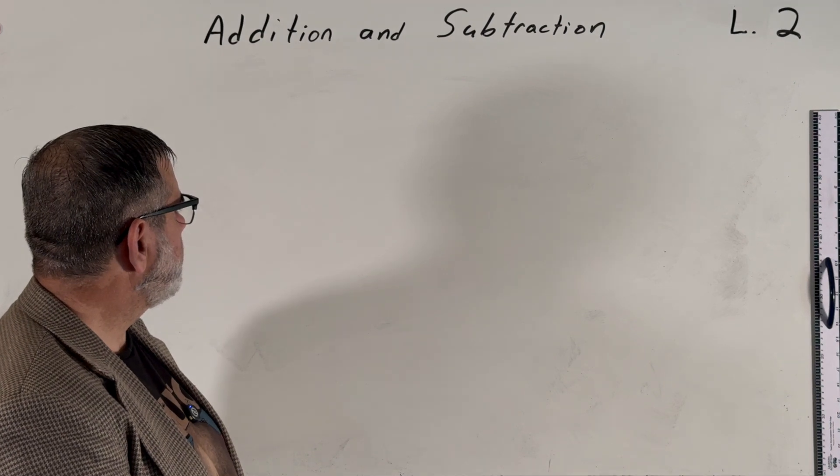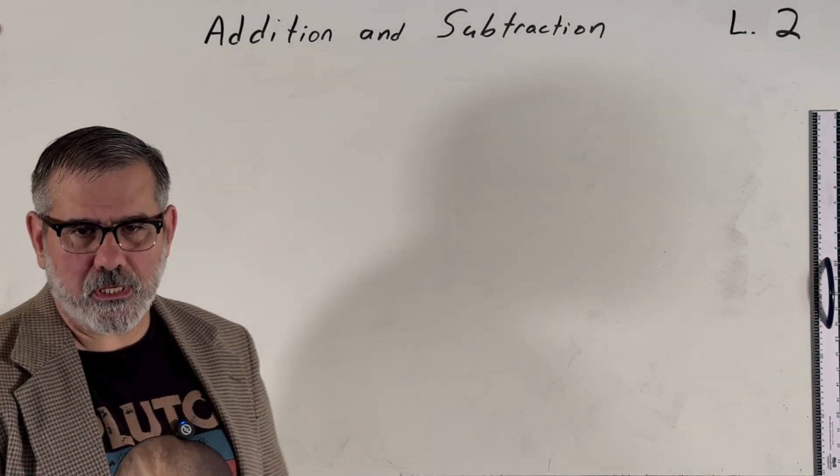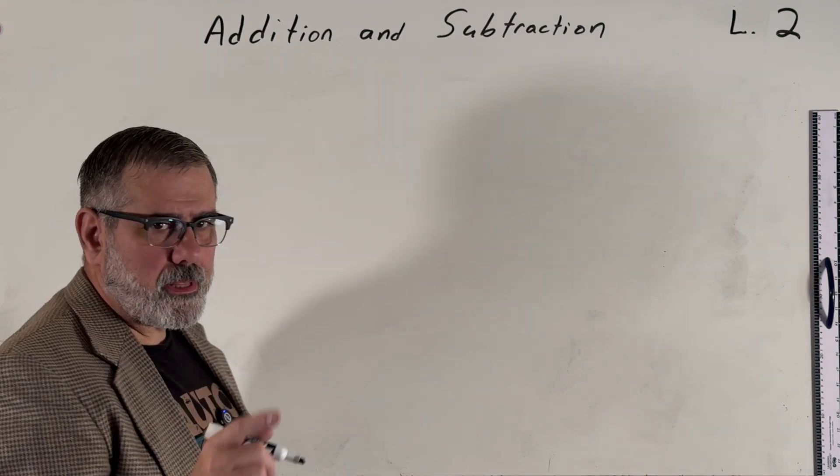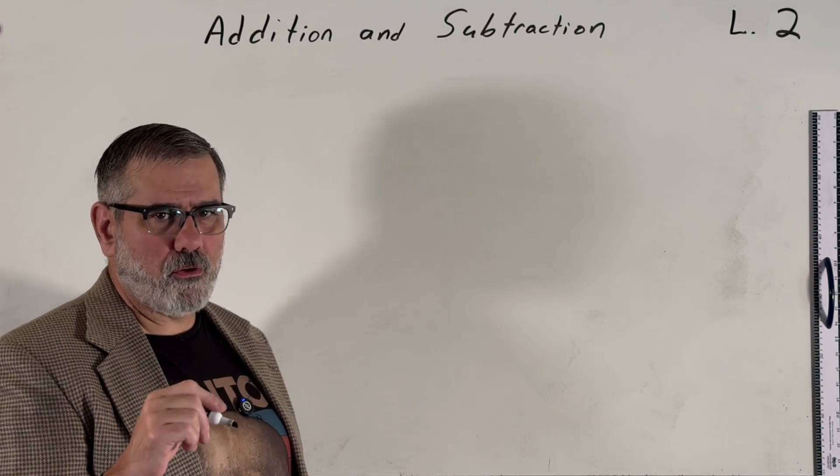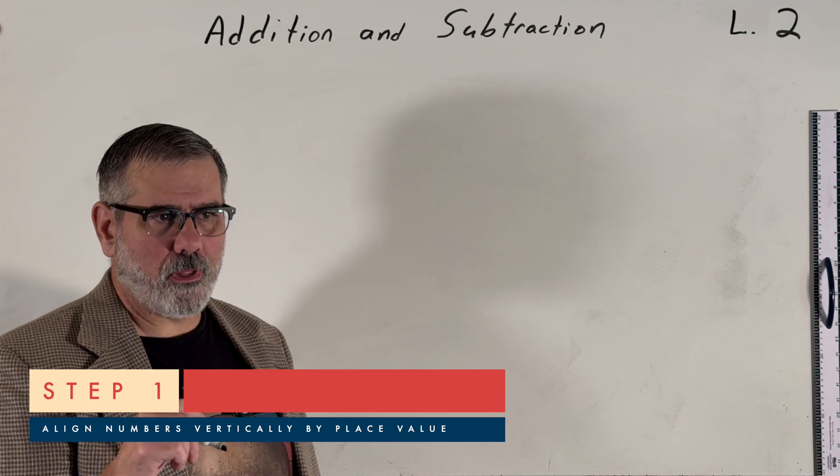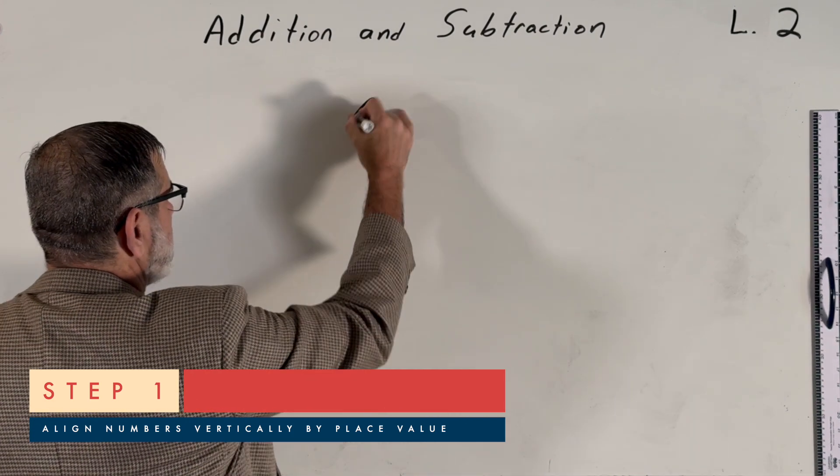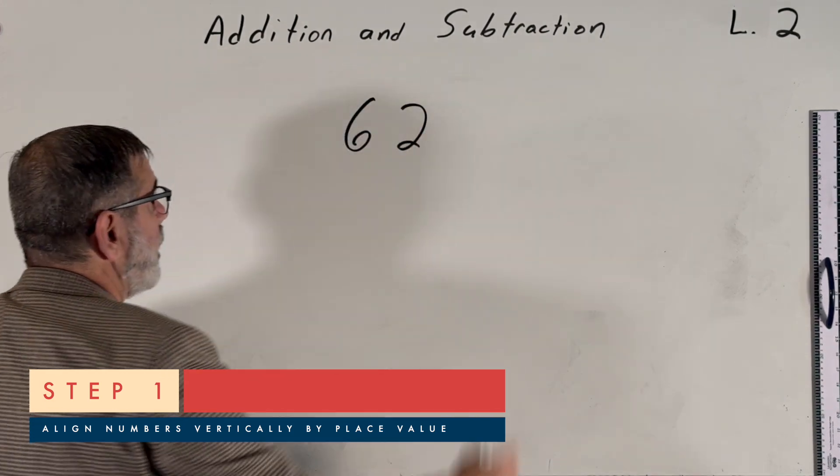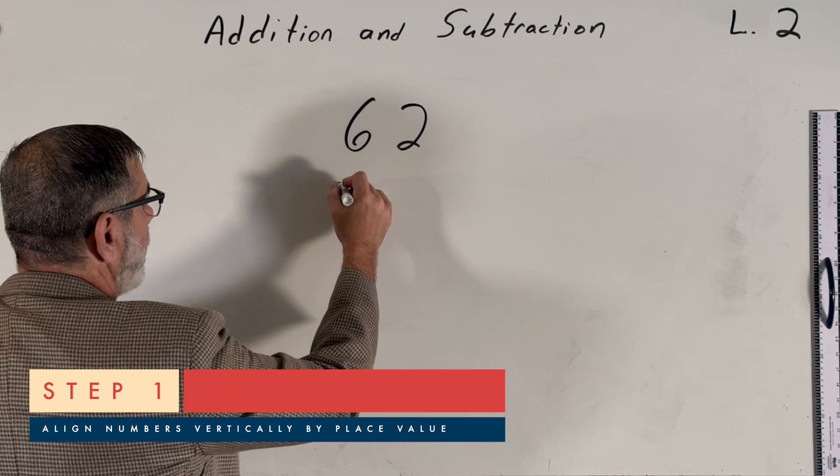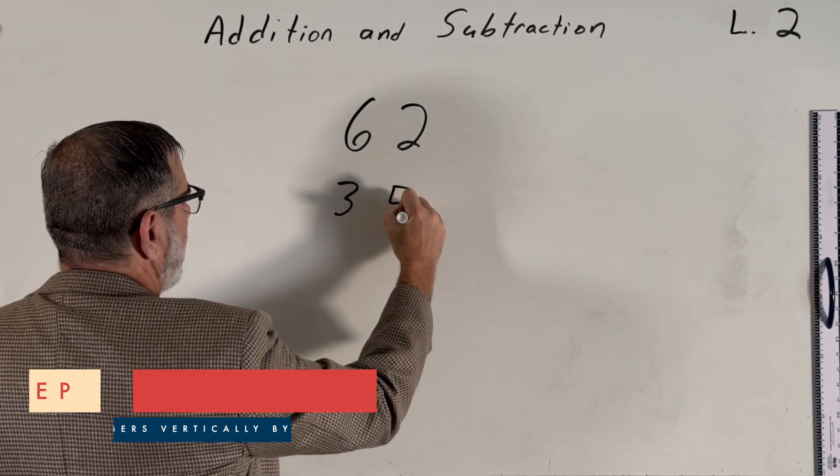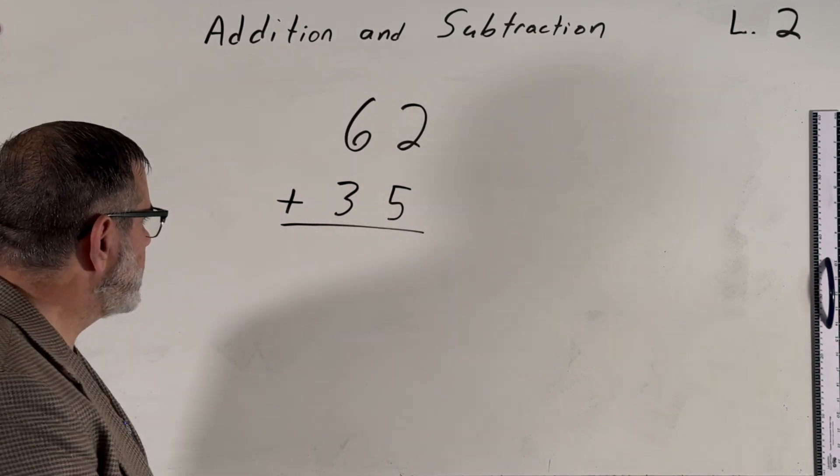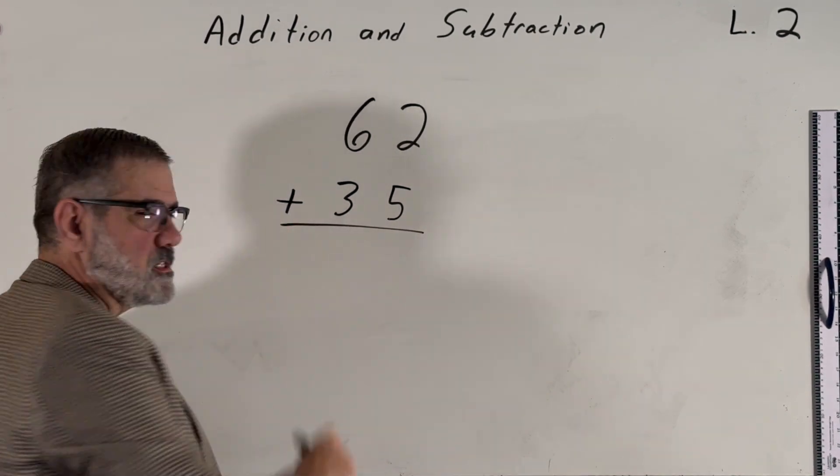So let's begin with a problem: 62 plus 35. Now, we also talked about place value last time, and so the first step in doing any addition problem is to align the numbers vertically by their place value. So I begin by writing 62, and then on the next line, I'm going to put 35. This section here will be where we place our answer. The plus means that we're doing addition.